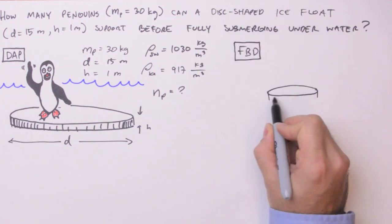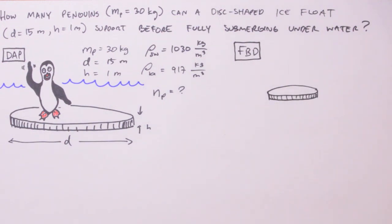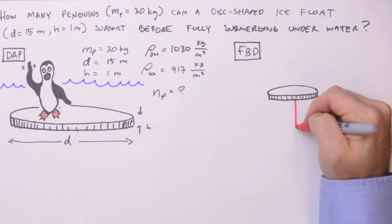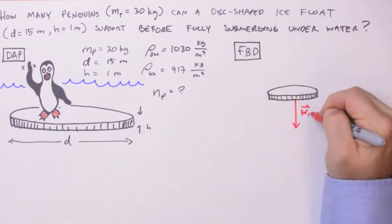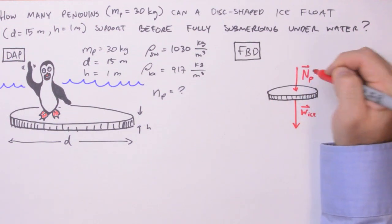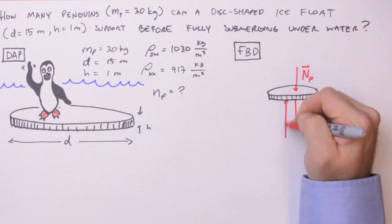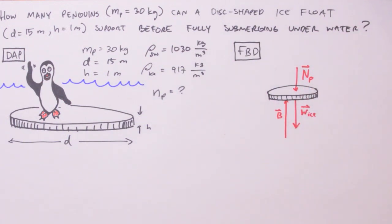A free body diagram is a diagram which isolates a body from its environment, indicating only the forces acting on that body. The forces acting on our ice float are thus: the weight of the ice itself, that is the force due to gravity, the normal force due to the penguins standing on top of the ice float, and balancing out these two forces is the buoyant force, due to the ice float being immersed in a fluid.